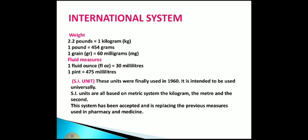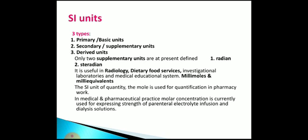The SI unit was derived in 1960 and is intended to be used universally. This system is based on the metric system and includes kilogram, metre, and second. This system also accepts and replaces the previous measures used in pharmacy and medicine. SI units are broadly of three types: primary, secondary, and derived units. Only two supplementary units are present: radian and steradian. These are useful in radiology, dietary food services, investigation reports, and laboratories.